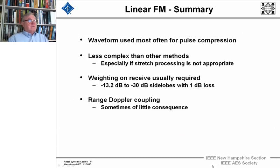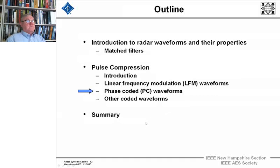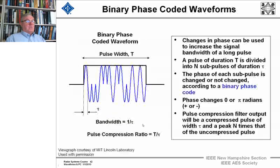In summary for linear FM systems, these waveforms are most often the way we implement pulse compression — they're less complex than other methods, especially when stretch processing is not appropriate. We weight on receive and get the side lobes from 13.2 down to 30 dB with that 1 dB loss. Range-Doppler coupling is sometimes of little consequence in most cases where it's used. Now let's move on to phase-coded waveforms.